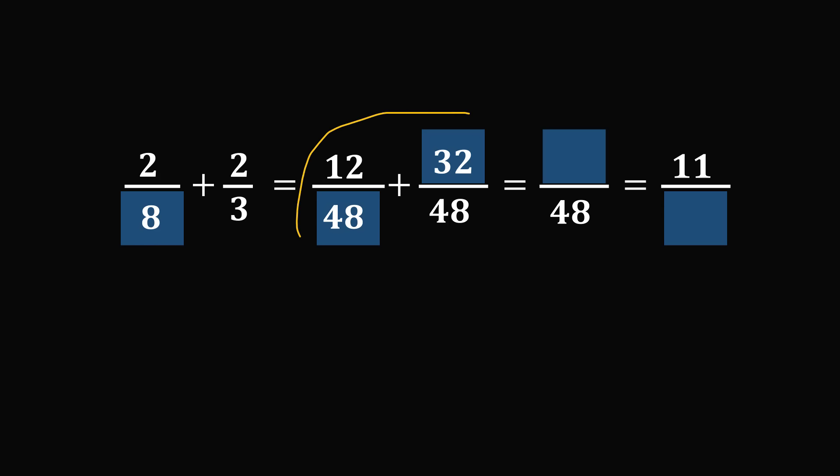We now have the sum of two fractions. We have a common denominator of 48, so we can just add the numerators. 12 plus 32 is equal to 44.